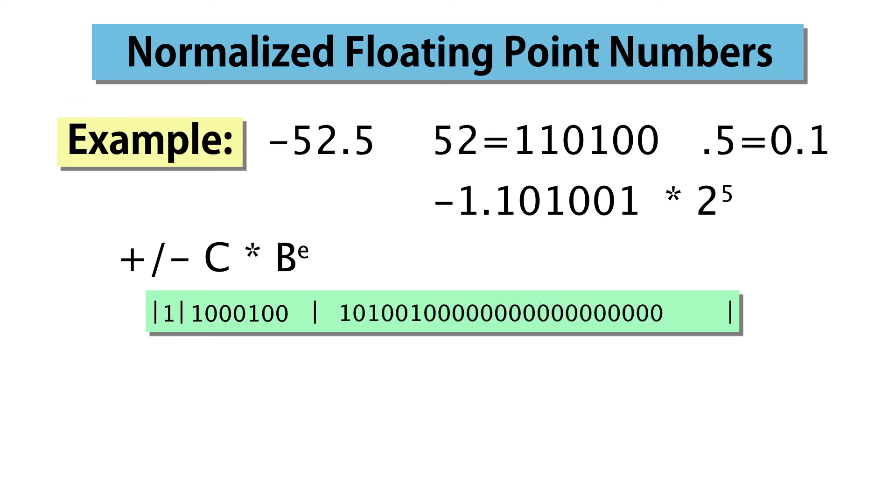This is the 32-bit float representation of the decimal number minus 52.5. There's one more thing worth mentioning.